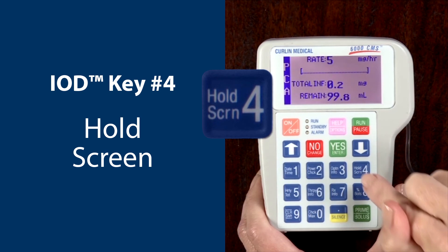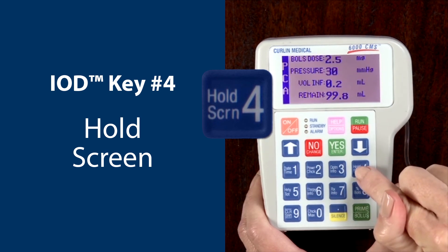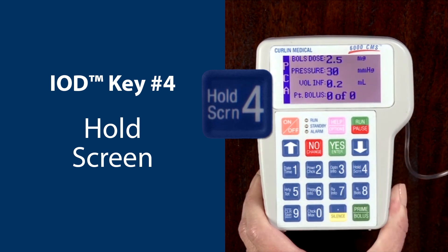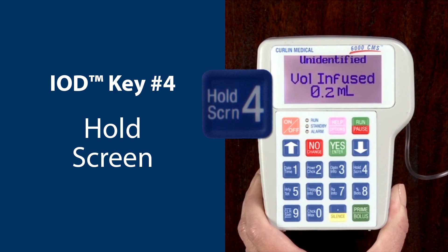IOD key number 4. Press the number 4 key for the hold screen function. Pressing this key will hold the current run screen information for an additional 6 seconds, and then the pump will return to the normal running screen.